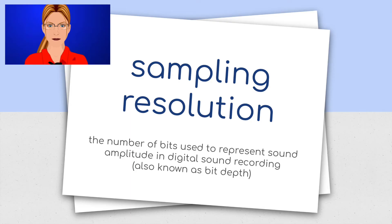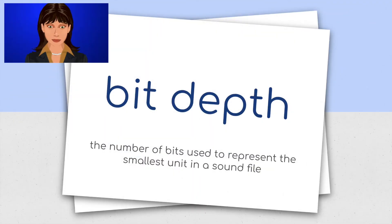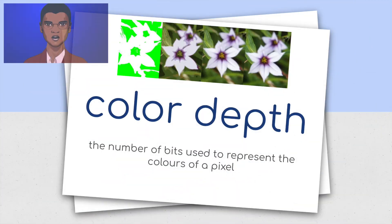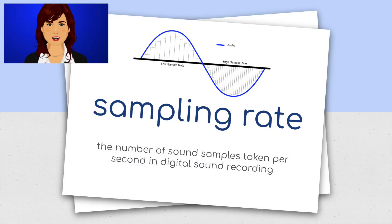Sampling resolution: the number of bits used to represent sound amplitude in digital sound recording, also known as bit depth. Bit depth: the number of bits used to represent the smallest unit in a sound file. Color depth: the number of bits used to represent the colors of a pixel. Sampling rate: the number of sound samples taken per second in digital sound recording.